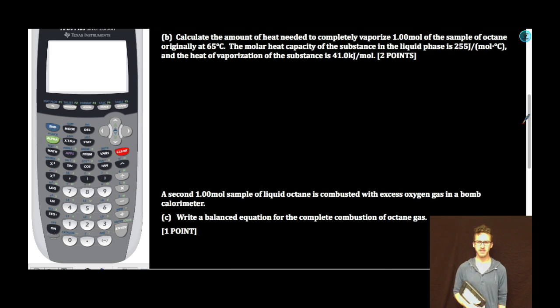Part B: Calculate the amount of heat needed to completely vaporize 1.00 mole of the sample of octane originally at 65 degrees Celsius. The molar heat capacity of the substance in the liquid phase is 255 joules per mole degree Celsius, and the heat of vaporization of the substance is 41.0 kilojoules per mole.